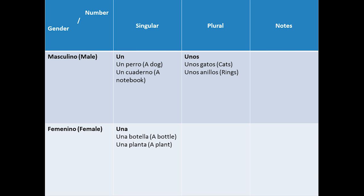For female words in singular form we have una. For example, una botella, una planta. For female words in plural form we have unas. For example, unas novelas, unas camisas.